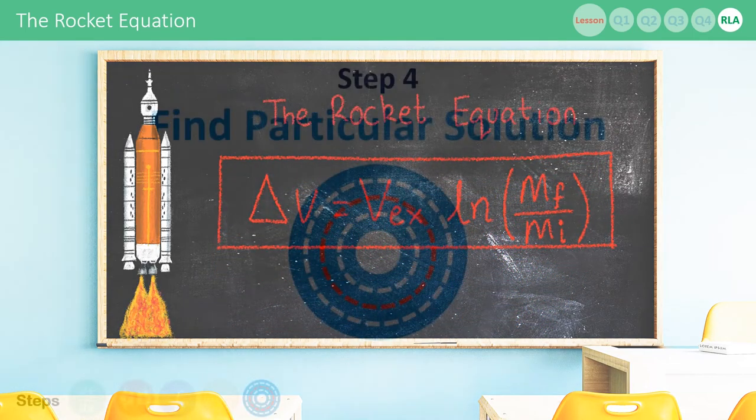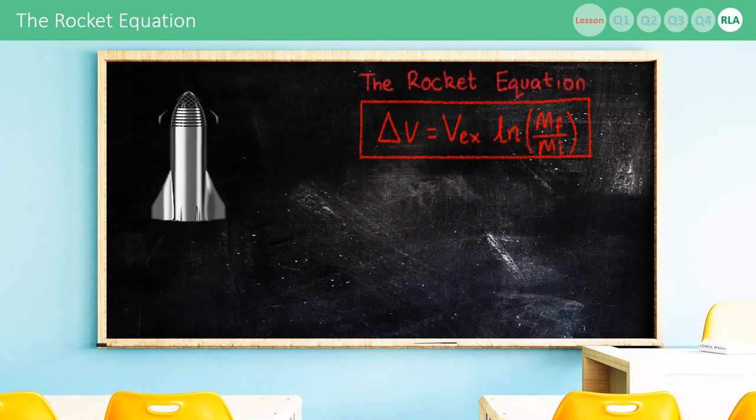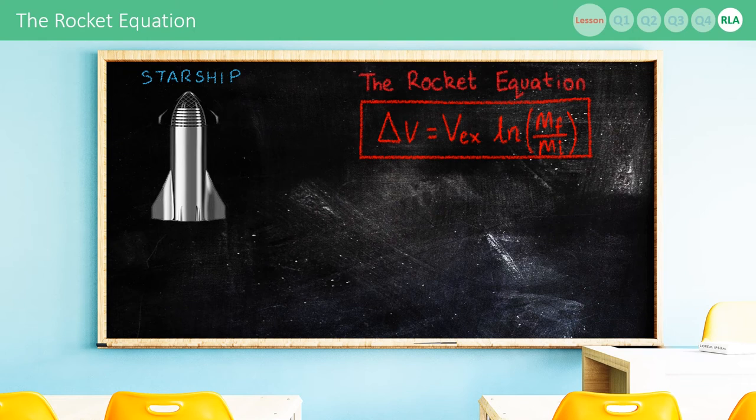So, how do we use it? Well, in step 4 we can find a particular solution by finding the delta v of a particular rocket. Let's take for example Starship, the newest creation of Elon Musk's SpaceX. The exhaust velocity in the equation can be replaced with ISP, the specific impulse, times the strength of gravity at sea level.